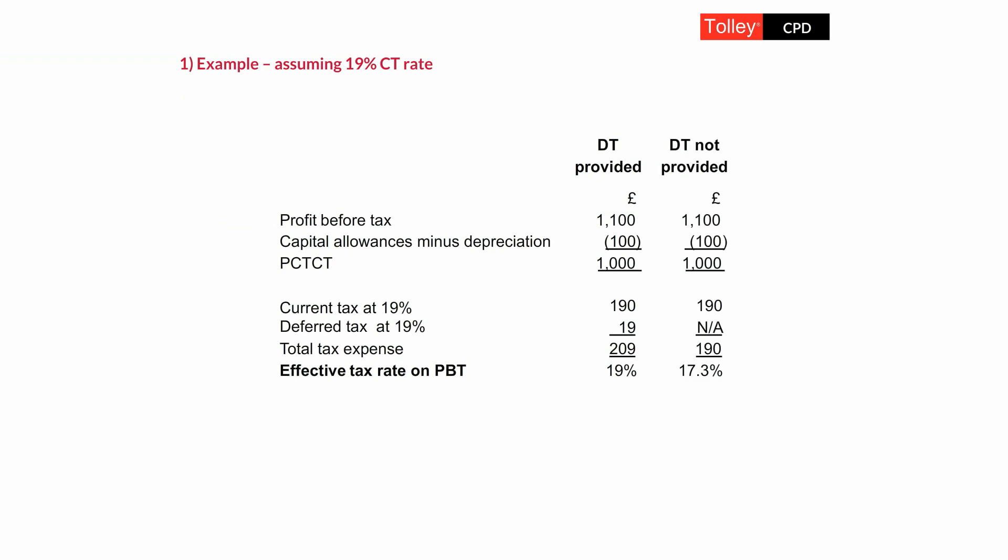If we didn't book deferred tax, the tax expense would be limited to the current tax amount of $190, which means the effective tax rate shown by the P&L would be $190 on a profit of $1,100 — giving us a 17.3% effective tax rate, looking a bit odd. You need to explain that away where relevant in a tax reconciliation.